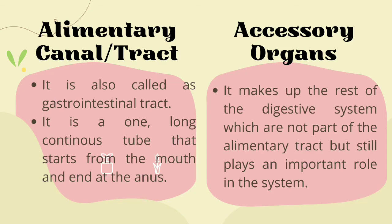This tube starts with our mouth and ends with our anus. All the organs that our food passes through are called the alimentary canal or alimentary tract. The accessory organs, on the other hand, are not directly passed through by our food, but they still make up the rest of the digestive system and play an important role in it.